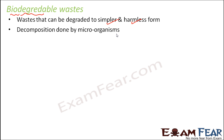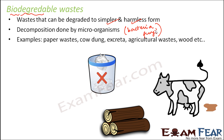Examples of wastes decomposed by microorganisms like bacteria and fungi — which are often called decomposers — include paper waste, cow dung, excreta, agricultural wastes such as vegetable waste, and wood. All these are biodegradable wastes. Even if we use and throw a lot of them, it is not a problem because it does not cause any harm to our environment.